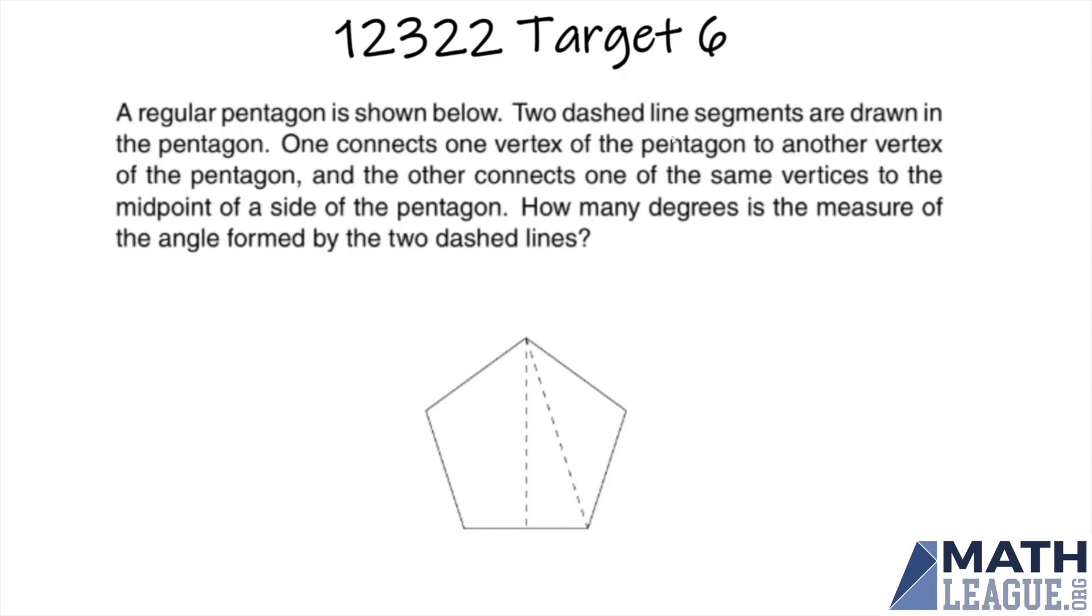Today I'm going to be solving number six on the target round. A regular pentagon is shown below. Two dashed line segments are drawn in the pentagon. One connects one vertex to another vertex, and the other connects one of the same vertices to the midpoint of a side of the pentagon.